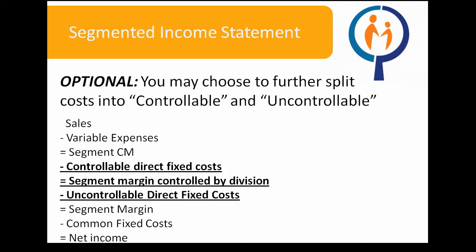If you choose to do so, you may further split your costs into controllable and uncontrollable costs. For example, instead of simply taking your segment contribution margin and subtracting direct fixed costs to find your segment margin, you can take your segment contribution margin, remove controllable direct fixed costs to find your segment margin controlled by the division, then take away your uncontrollable direct fixed costs to find your segment margin. Controllable costs are those that the division or segment has control over, whereas uncontrollable costs are those the division or segment has no control over, or costs that may have been imposed by the company's head office.